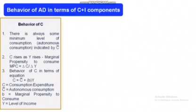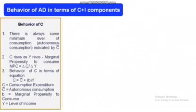Now let's talk about the behavior of aggregate demand in terms of consumption and investment components. Regarding the behavior of C: there is always some minimum level of consumption, which we call autonomous consumption. This means that even when income is zero, we are still consuming something. As income rises, the consumption level also rises. The marginal propensity to consume (MPC) is the change in consumption due to change in income. The consumption equation is: C = C̄ + bY, where b is the MPC.